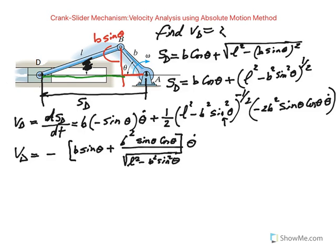Here we go. That was the goal. We got an expression for velocity of D in terms of these parameters B, L, and the angle theta. So this is going to give us velocity of D.